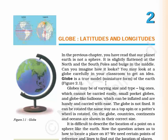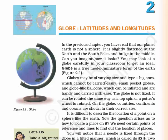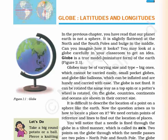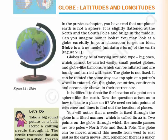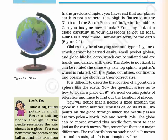Welcome to chapter two: Globe, Latitude and Longitudes. In this chapter, we'll read about globes on which countries, continents and oceans are shown in the correct size. As we know, it's difficult to describe the location of a point on Earth. So the question is, how do we do it? Hence, page one talks about how we need certain points of reference and imaginary lines to find out the location of places.